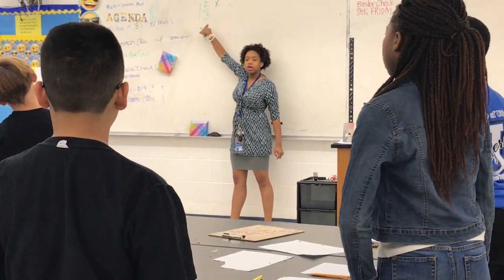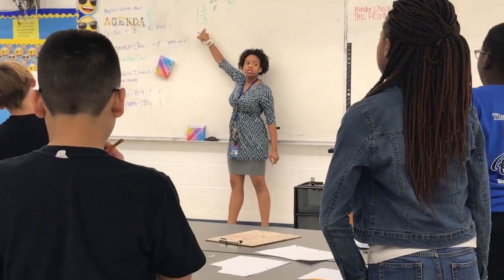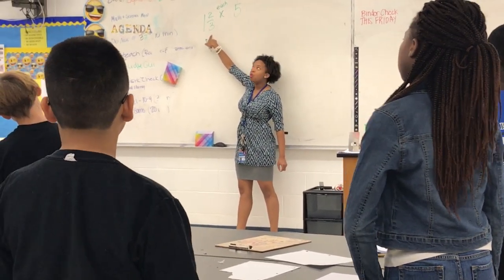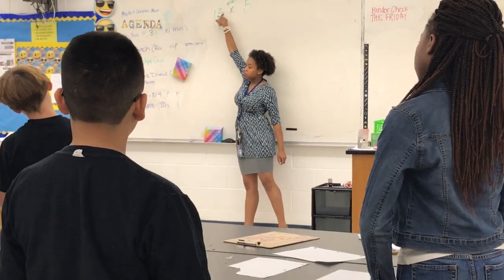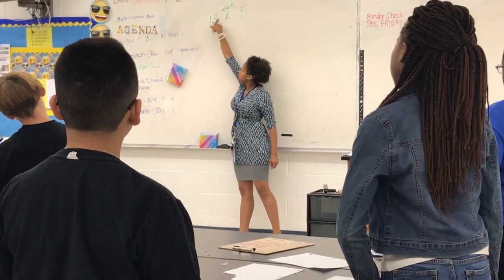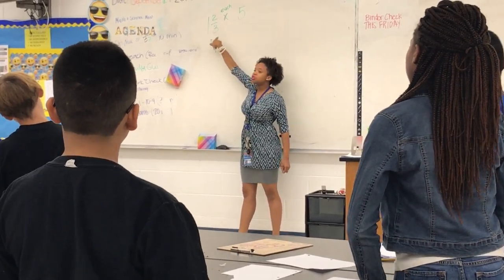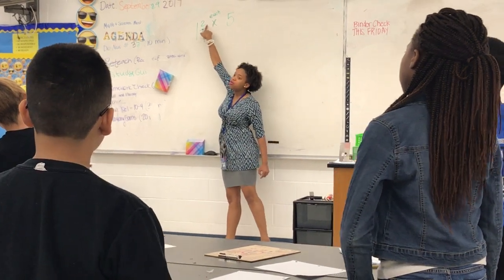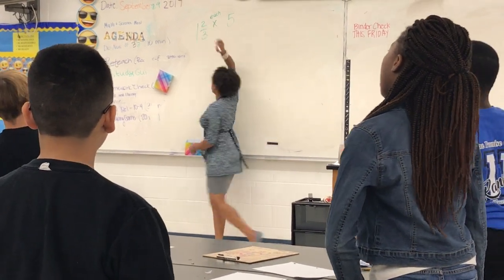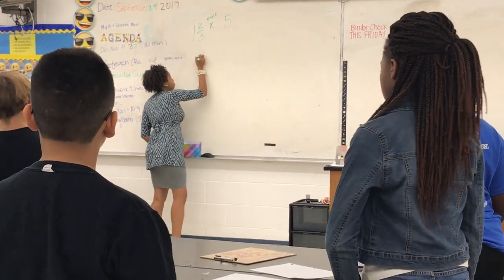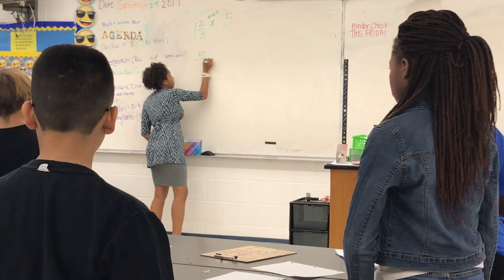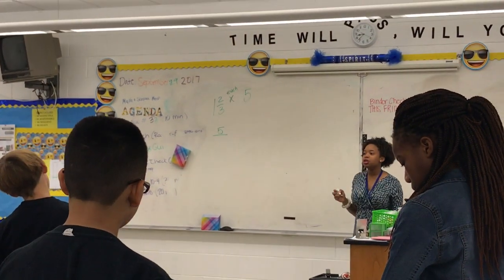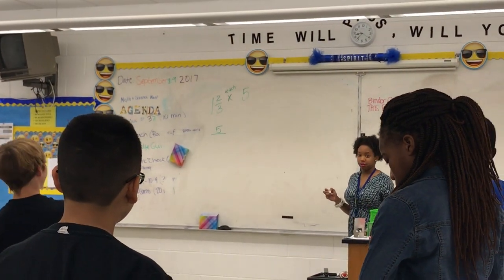The first step is to multiply my whole number by my denominator. One times three is three. And then add that to my numerator. So one times three is three, and three plus two is five. That's going to be my numerator. What do you think my denominator is still going to be? Three.